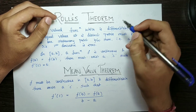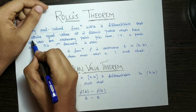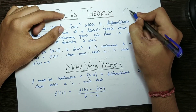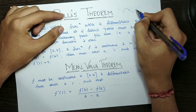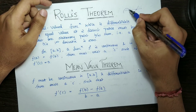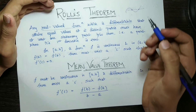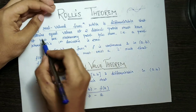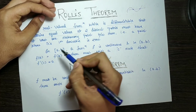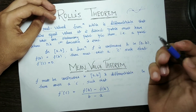At every point, the derivative exists. The function attains equal values at two different points, meaning the function has the same value at those two endpoints. At all the intervals in between, it has to be differentiable. Then the function must have at least one stationary point in between them.